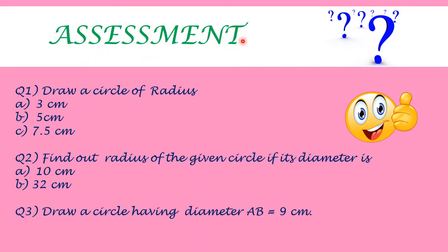Now we come to the assessment section. Children, do these questions in your maths copies. Question 1: Draw a circle of radius a) 3 cm, b) 5 cm, c) 7.5 cm. Question 2: Find out the radius of the given circle if its diameter is a) 10 cm, b) 32 cm. Question 3: Draw a circle having diameter AB equal to 9 cm.